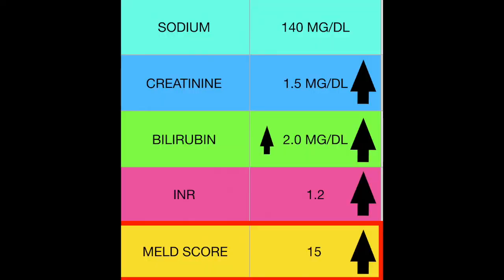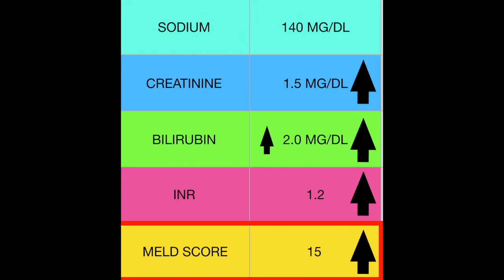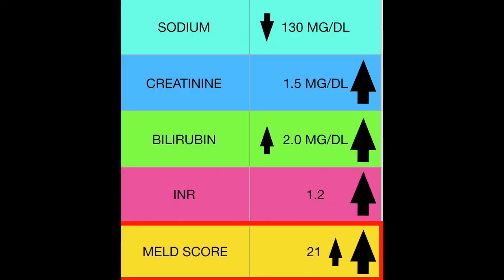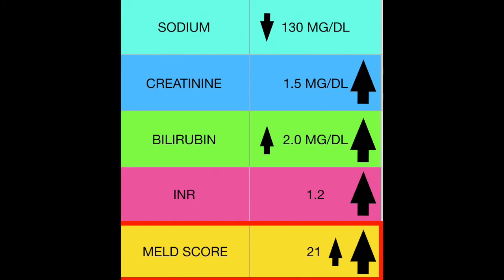The third calculation: serum sodium is still at 140, serum creatinine is still at 1.5. But if the bilirubin goes from 1.0 to 2.0, keeping the INR at 1.2, the MELD score is now 15. Let's take it one more step. We're going to drop the serum sodium to 130. We do know that as the serum sodium decreases, mortality goes up and there are more complications. We're going to keep the creatinine at 1.5, the bilirubin at 2.0, and the INR at 1.2. Here the MELD score jumps to 21.